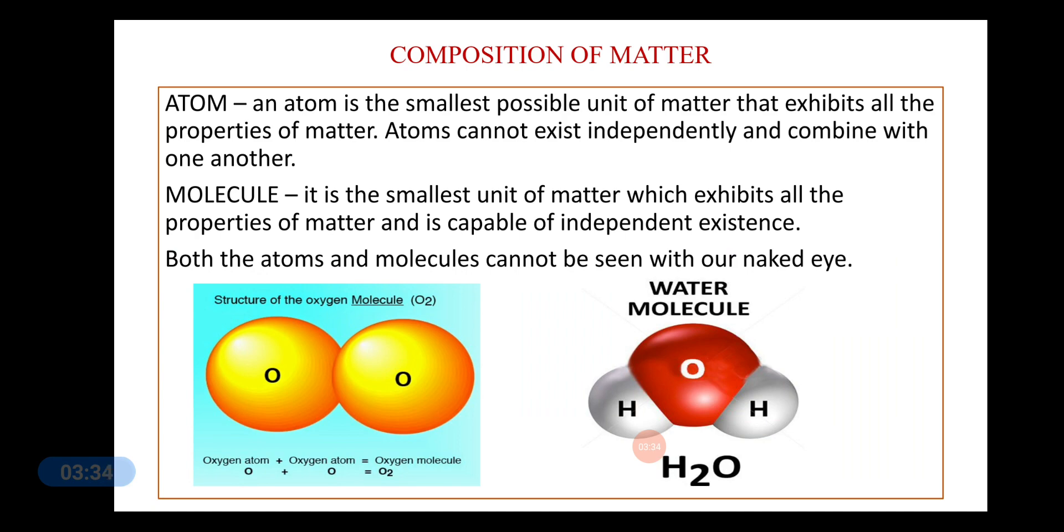Composition of matter. Let us study about the composition of matter in details a little bit. Matter is made up of very small particles. What are these small particles? They are known as atoms. An atom is the smallest possible unit of matter that exhibits all the properties of matter. These atoms cannot exist independently and combine with one another.